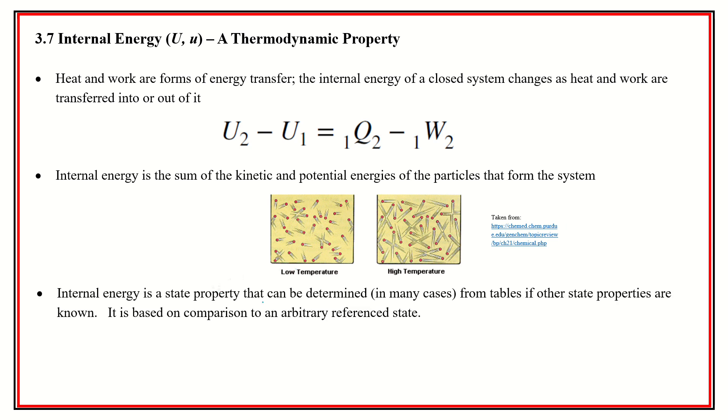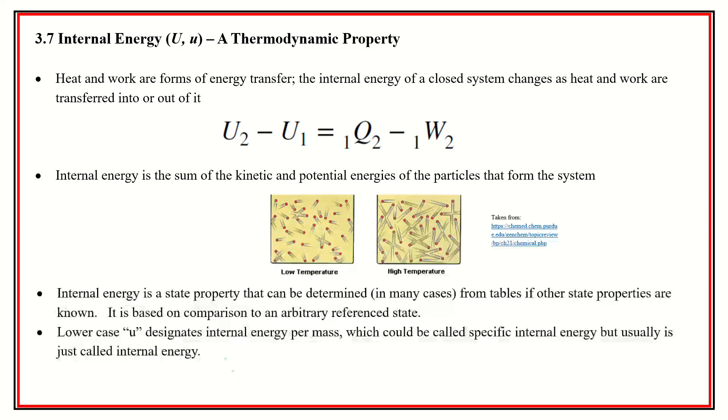Internal energy is a state property that is determined, in many cases, from tables if other state properties are known. So it is based on the comparison of an arbitrary reference state. When we create those tables, we just pick some arbitrary reference and then measure as a comparison of that. We use the lowercase u when we have internal energy per mass.